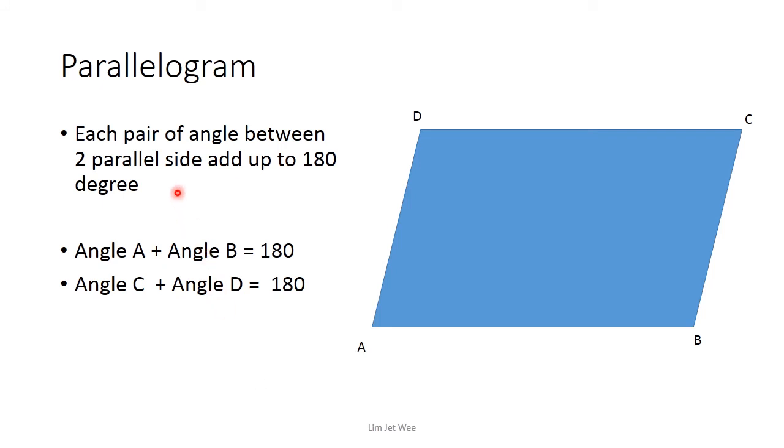But parallelograms also have a special relationship. Each pair of angles between two parallel sides will add up to 180 degrees. In class, you would take a piece of paper, cut it out, and then you would see. But of course, I can't do this here. I'll just explain it using the same diagram that we have previously.